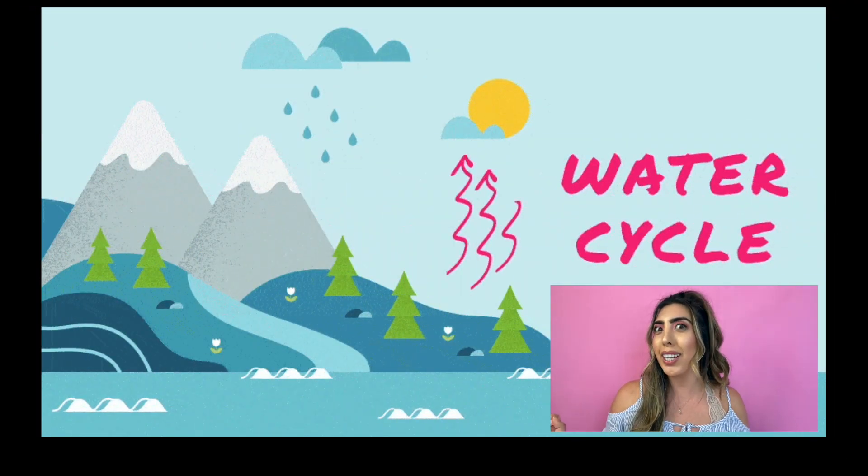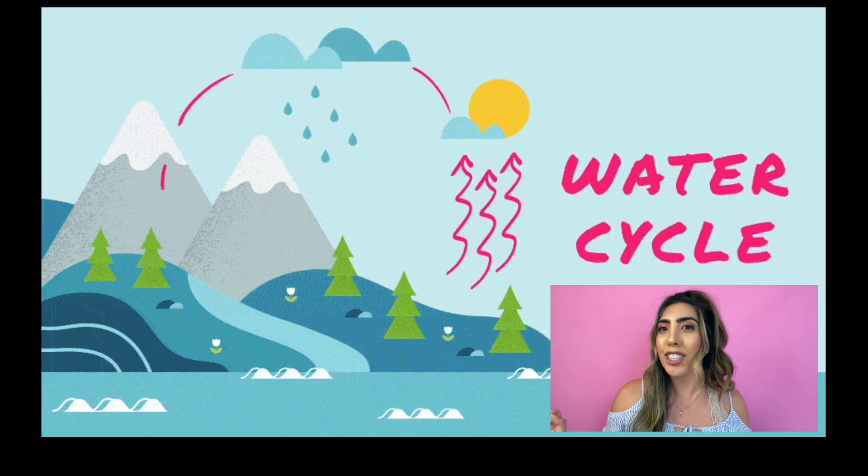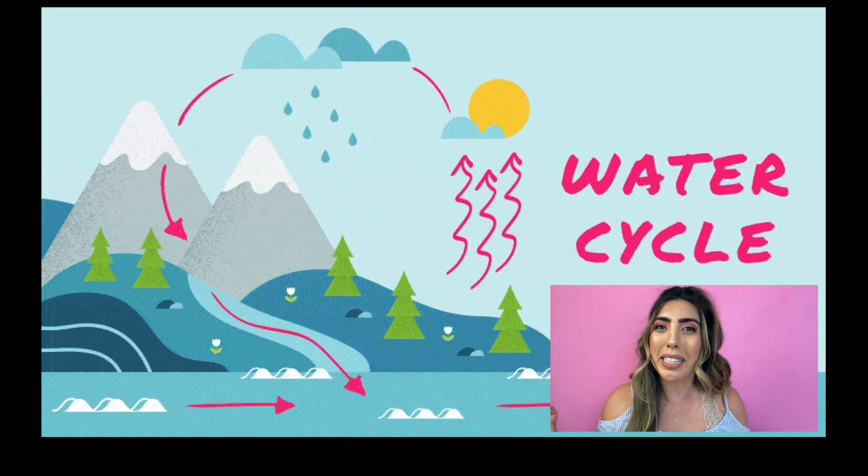I have no idea why I failed this one — actually, I do. It was because I had no idea what the water cycle was. I know what the water cycle is now. I mean, I already knew what it was — precipitation, evaporation, all that stuff — but for whatever reason, I had no idea that the water cycle was the name of that process. But that's subset two.